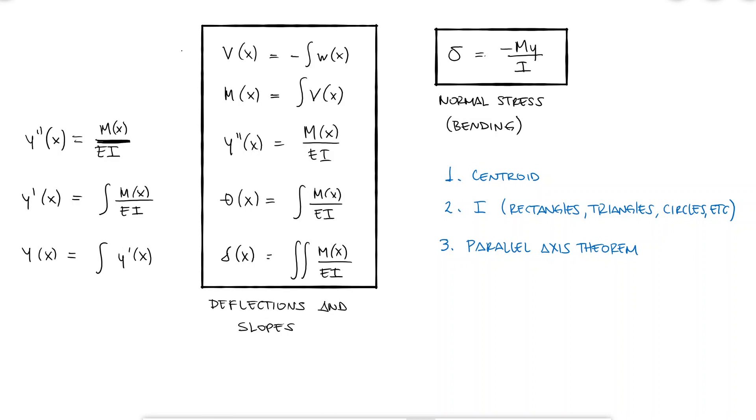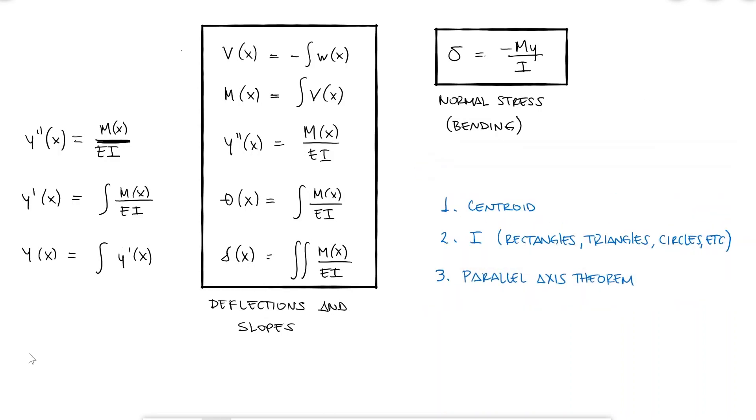When finding the second moment of area for composite materials, there was one extra step which consisted in transforming one of the materials by making it wider or skinnier to account for the different elastic moduli.